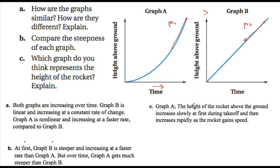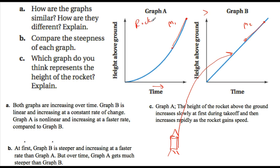Graph B represents the weather balloon — it gains more speed in the beginning and then less toward the end, curving up gradually. So the rocket starts slow and accelerates rapidly; the weather balloon starts faster and levels off. Slope one versus slope two — you can compare the steepness at different intervals to understand which is steeper at a given time.